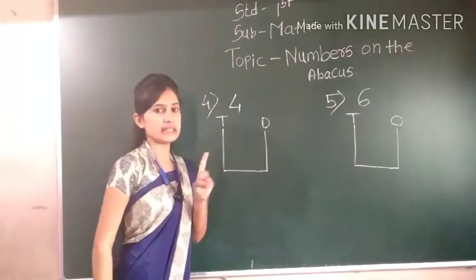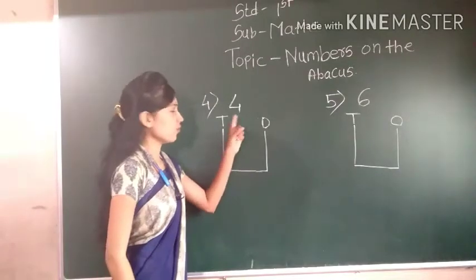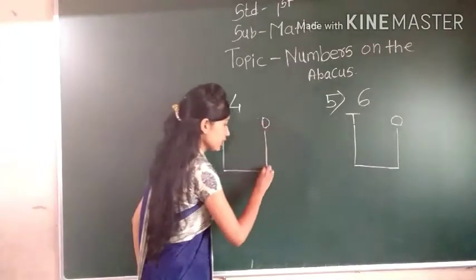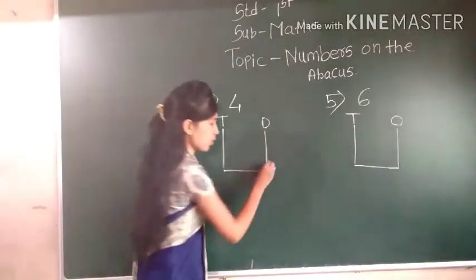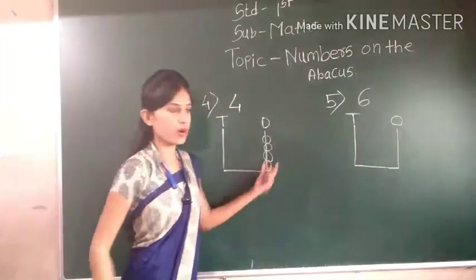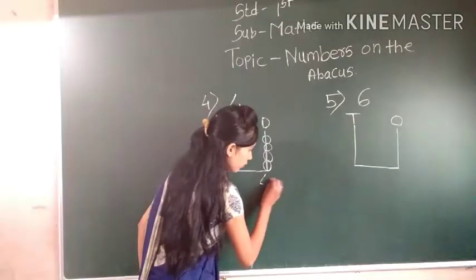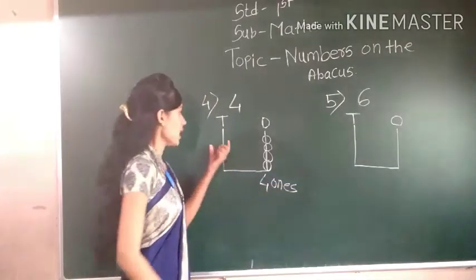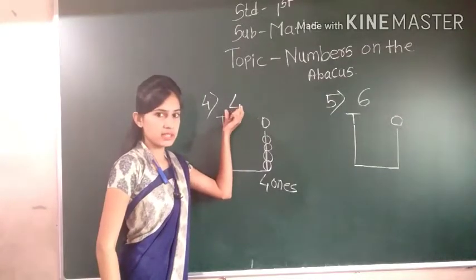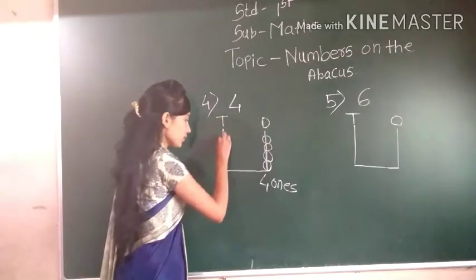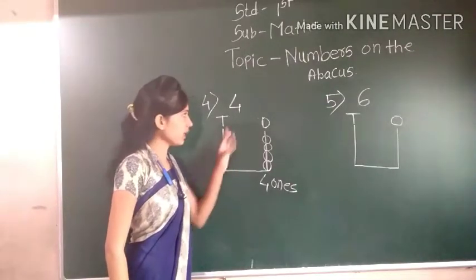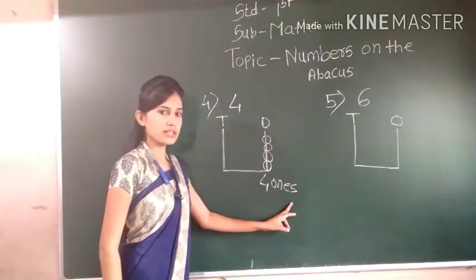Next, here we have to write only a single digit number — four ones only. So we have to draw four bits at one's place: one, two, three, four. Four bits, four ones. And at ten's place — nothing is present. So we have to write zero tens and four ones only.